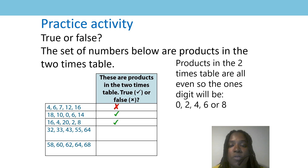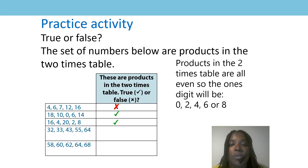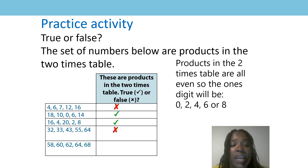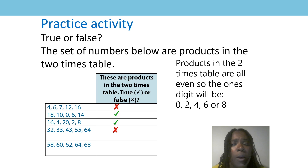Let's look at the other set of numbers: 32, 33, 43, 55, 64. Did you have a tick or a cross? That's right — that would be a cross, because in the ones digits we can see a 3 and a 5, and they are not products we would find in the two times table because they are not even numbers.